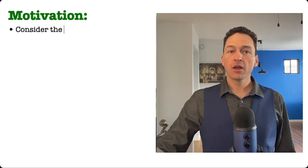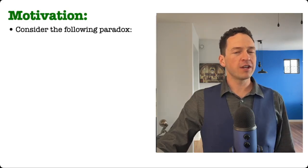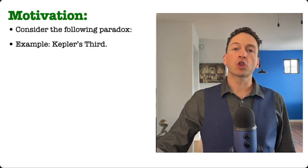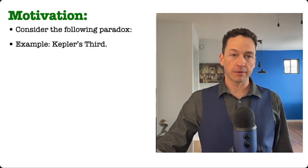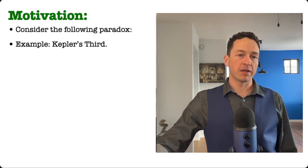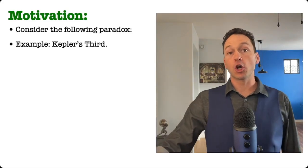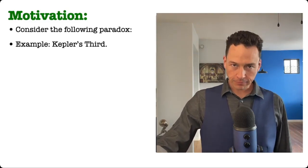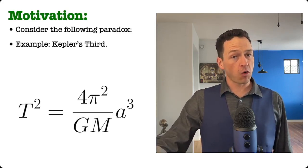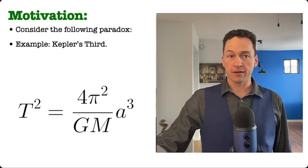Motivation. When trying to understand the proof of a given scientific conclusion, one will often run into a certain kind of paradox. As an example of this paradox, consider Kepler's third principle of planetary motion. This principle describes a quantitative relationship between the size of an orbit and its period. Period refers to the amount of time it takes for an orbiting body to go around a central body. Kepler's third principle is often written in modern textbooks in this form, where A describes the size of the orbit and big T describes the period of the orbit.